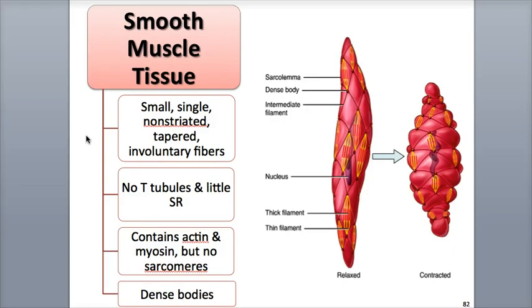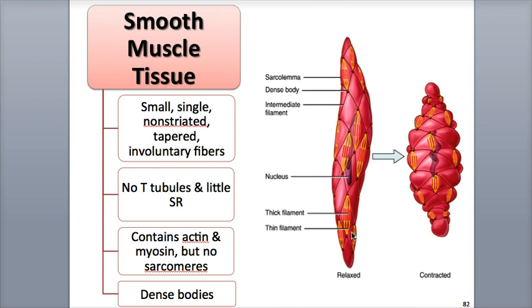Smooth muscle tissue is different from both skeletal and cardiac muscle in that it is non-striated. It has a tapered shape, with the ends coming to points, with a thicker middle portion containing a single nucleus. It lacks the sarcomere arrangement of the other muscle types, but it does contain both thick and thin filaments. It also contains intermediate protein filaments and dense bodies that are spread out through the sarcoplasm, as well as attached to the muscle sarcolemma. The dense bodies work in a way similar to the Z-discs in striated muscle, and serve as attachment points for the thin filaments.